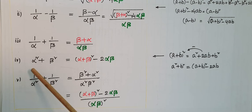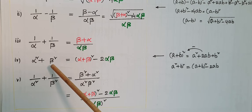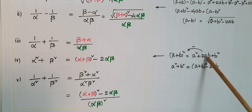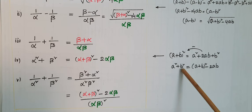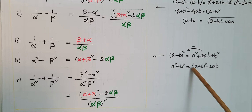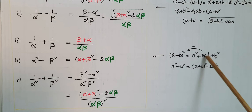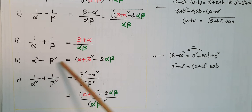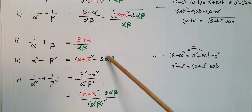Next, alpha² plus beta²: this comes from the identity (a+b)² equals a² plus 2ab plus b², so a² plus b² equals (a+b)² minus 2ab. Therefore, alpha² plus beta² equals (alpha plus beta)² minus 2·alpha·beta.